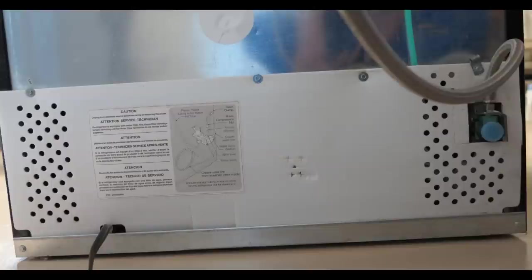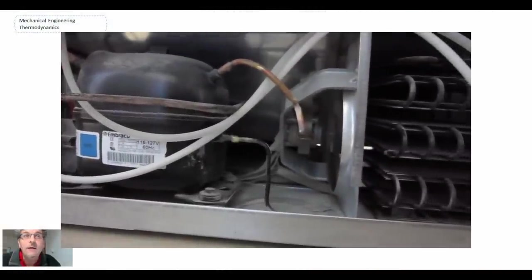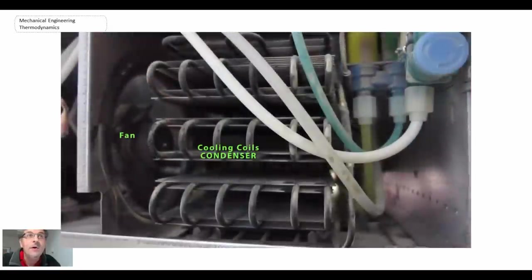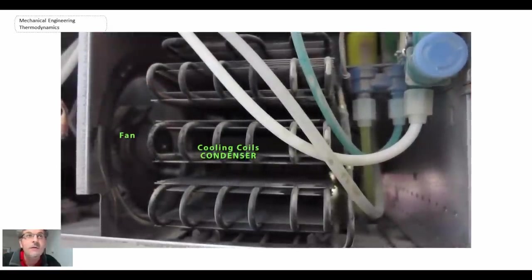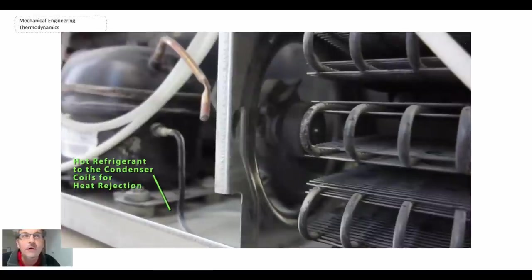This is a modern refrigerator. Notice there are no coils on the back. Everything has been compactly placed underneath, so it's a lot cleaner and you don't get dust buildup. There's our compressor. In the middle is a fan which actually causes forced convection that comes over our cooling coils, our condenser. The condenser is neatly compacted in the bottom of the unit, no longer on the back.